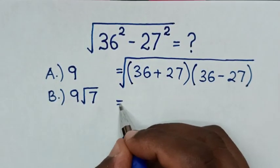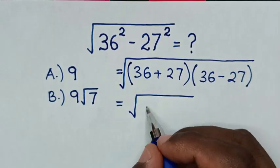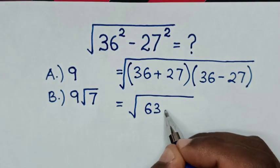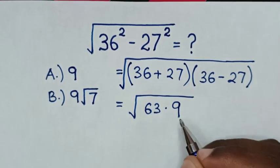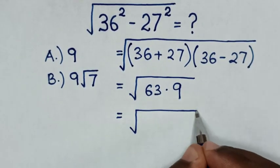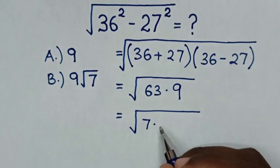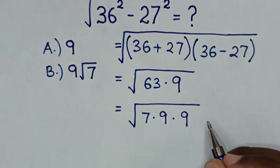Then, it will be equal to square root of this plus this is 63, then times this minus this is 9. Then, it will be equal to square root of 63 is same as 7 times 9, then times this 9.